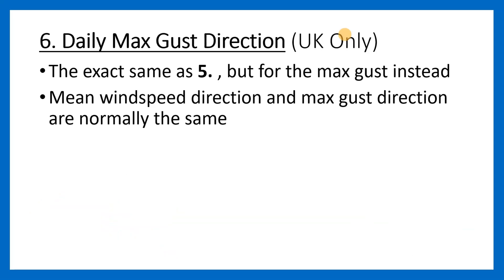The sixth measurement is the daily max gust direction, also only for the UK. This works the exact same as the previous one, but rather than being for the daily mean wind speed, it's for the daily max gust instead. There are not really any trends here. However, one thing to note is that the max gust direction and the mean wind speed direction are normally the same.